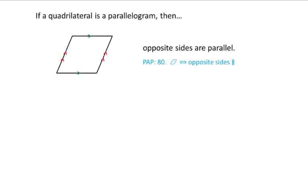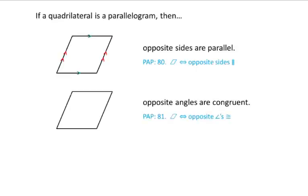If you're in pre-AP, I'm also going to write all the implied statements on there, so I will be looking for that in my notes check, so make sure you have it down. Next, if a quadrilateral is a parallelogram then opposite angles are congruent. We mark congruent angles with arcs. The top left and bottom right angles are congruent, and then the bottom left and top right angles are congruent.